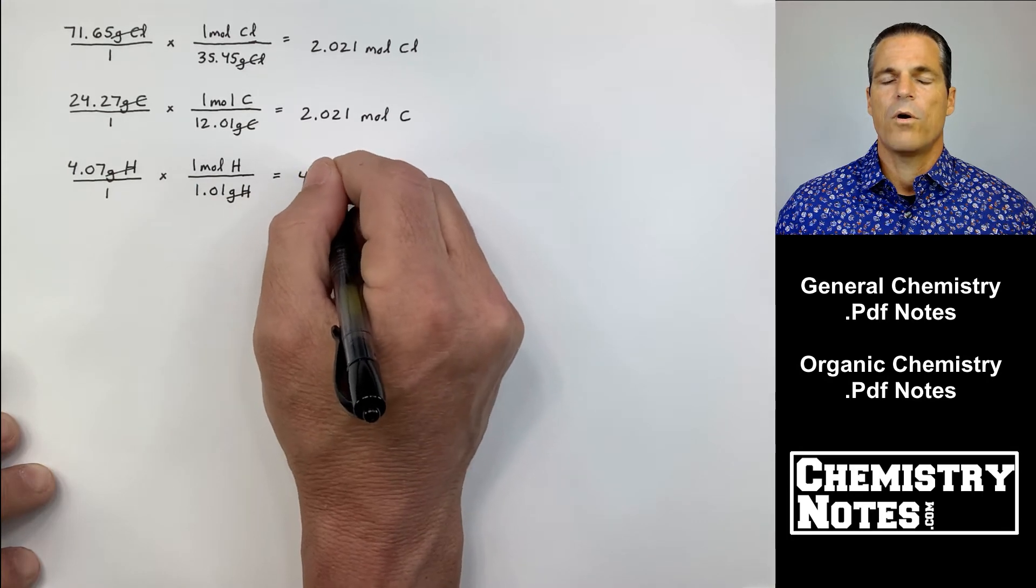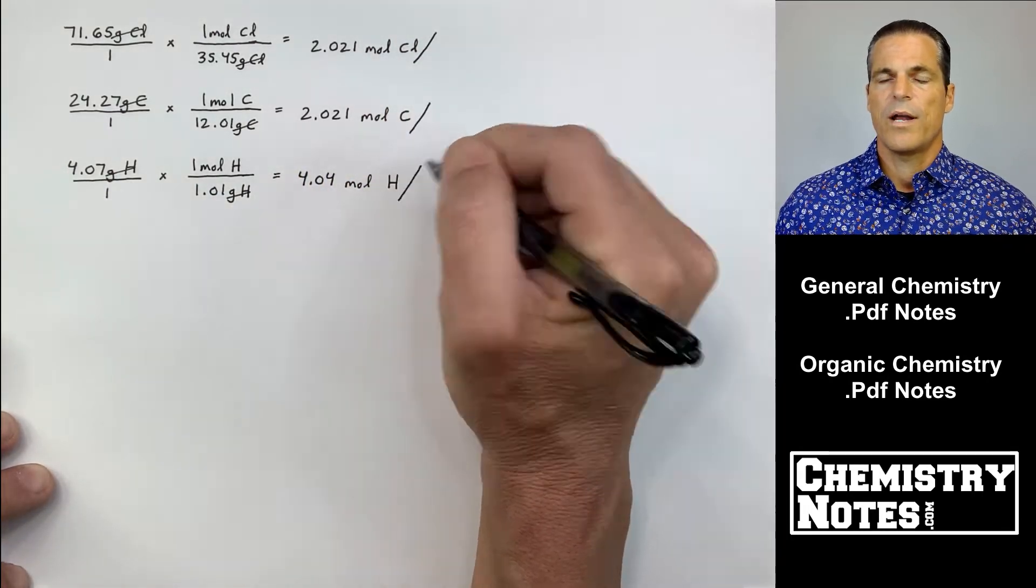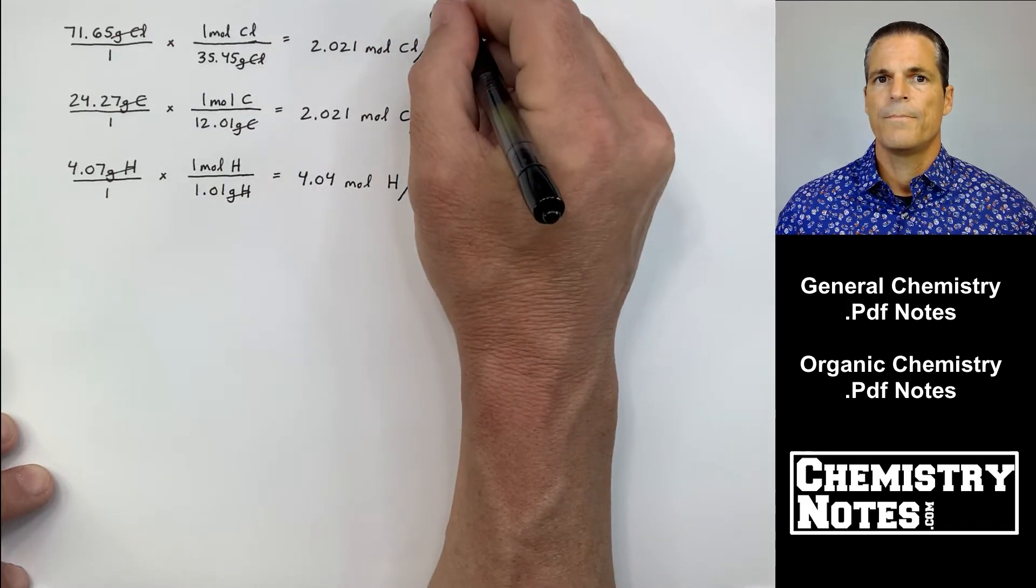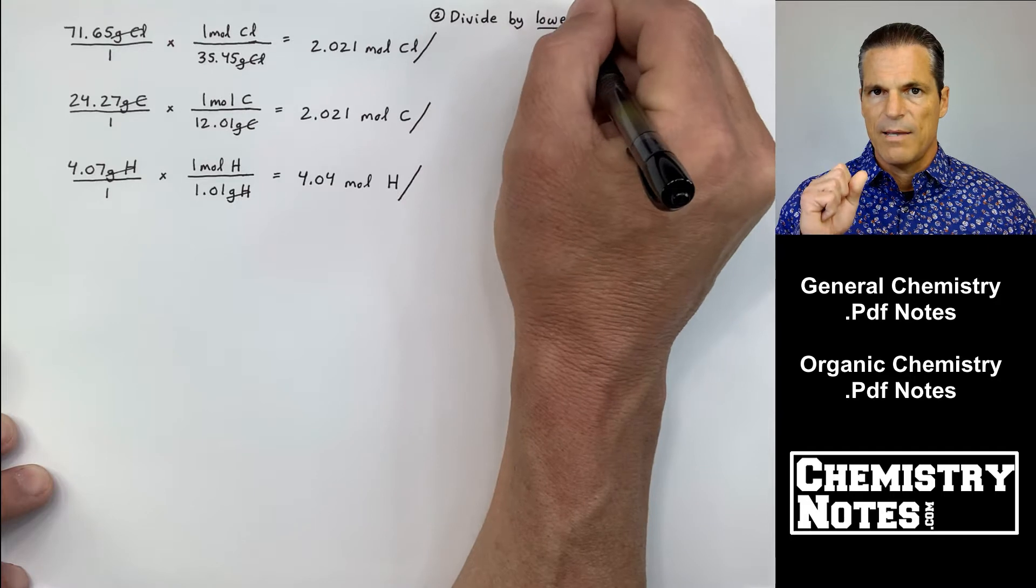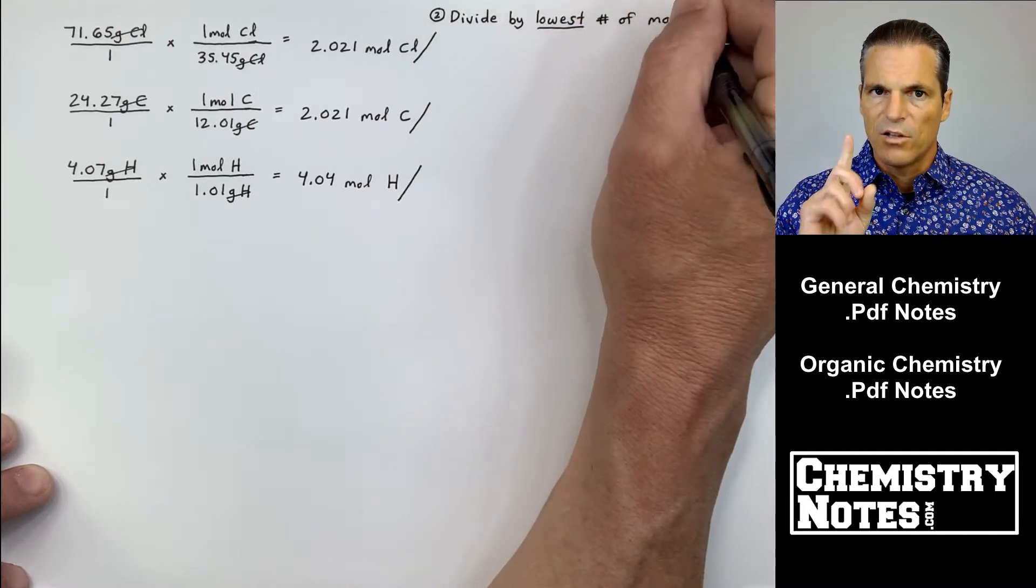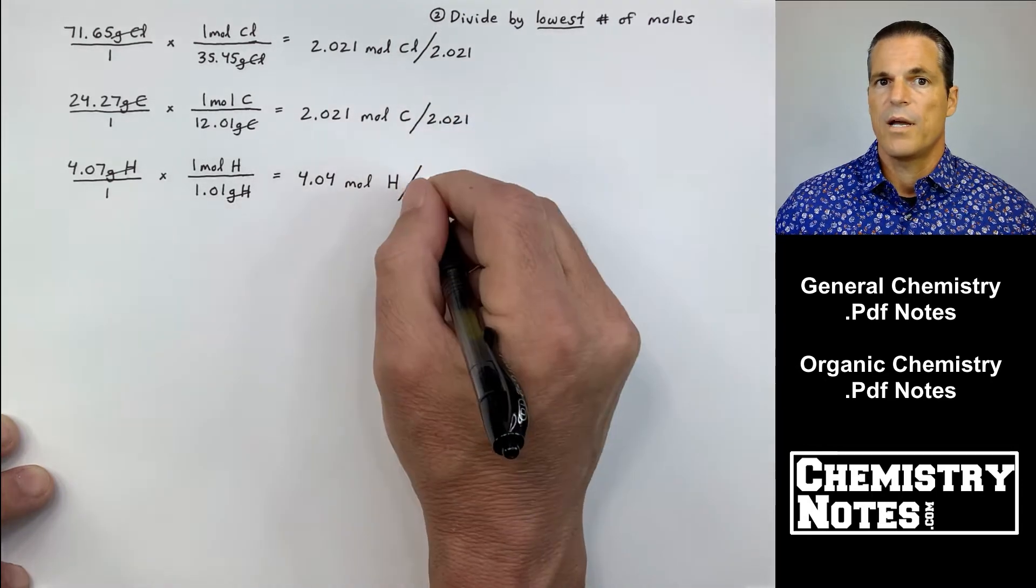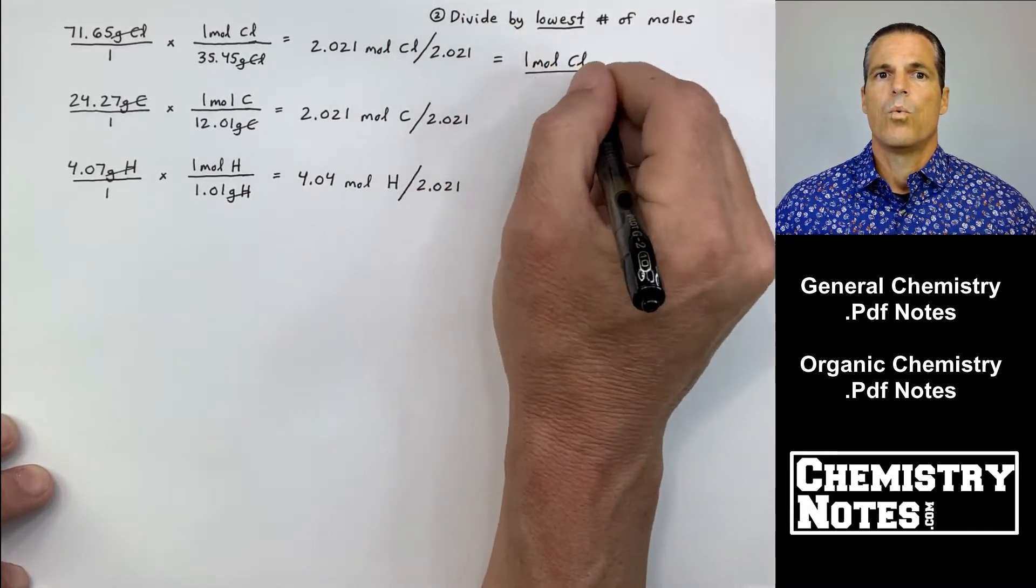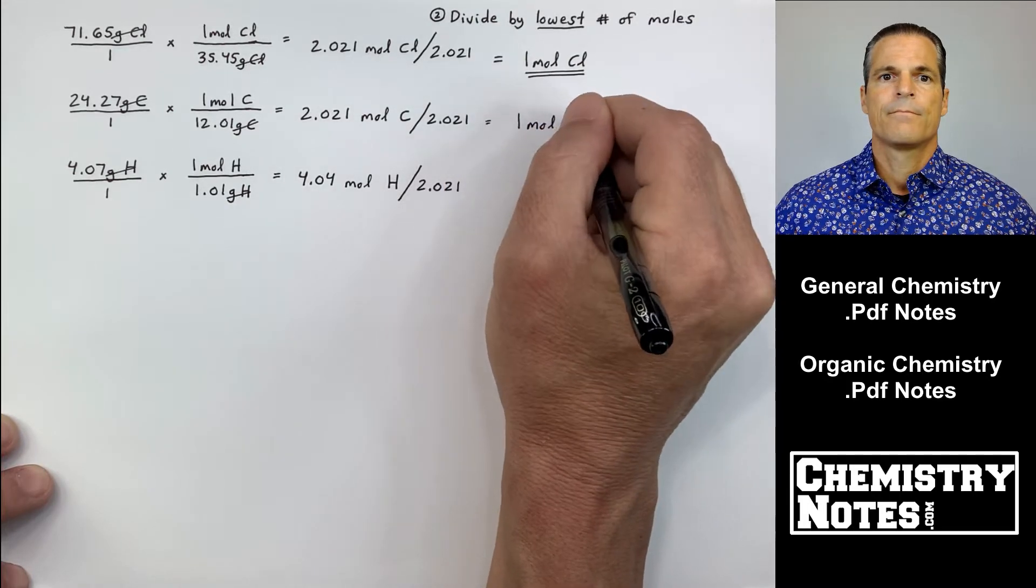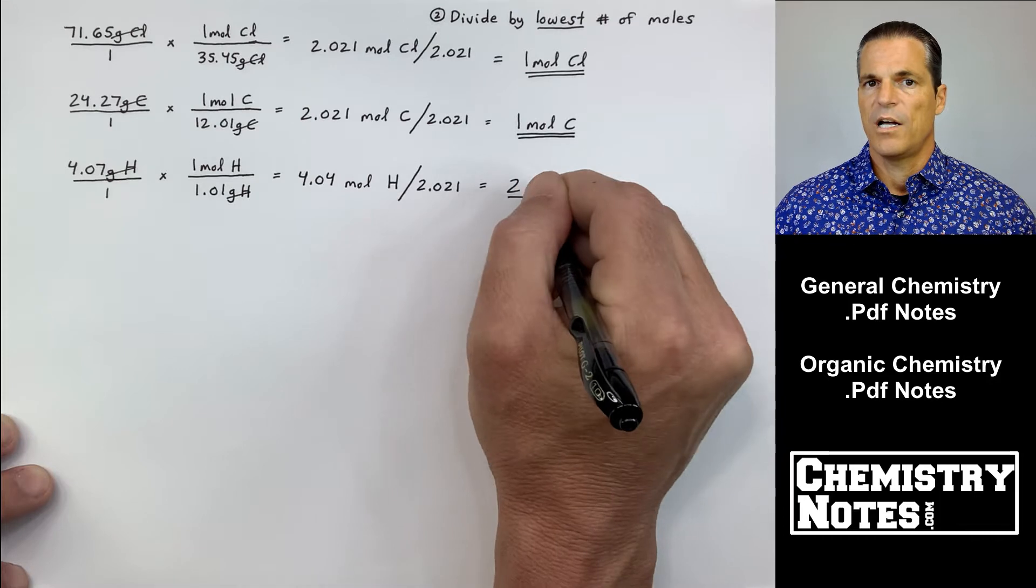4.04 moles of hydrogen. So step one: convert grams to moles. Step two: we're going to divide all three of these mole values by the same number, and that number is the lowest number of moles, 2.021.